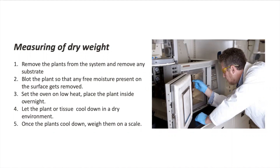Now set an oven with low heat and place the plant tissue or plant inside. This can be a long process — usually we do this overnight. Once plants cool down and the tissue is completely dry, then we can weigh the final tissue.